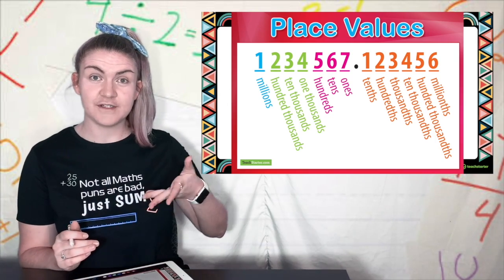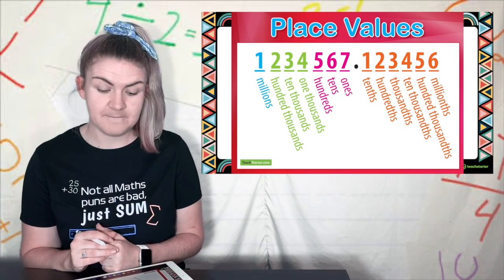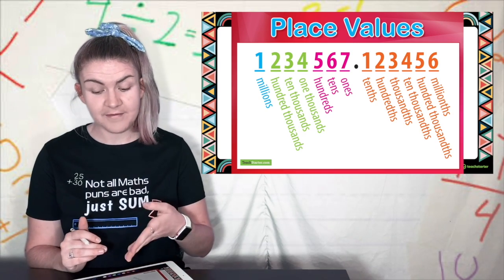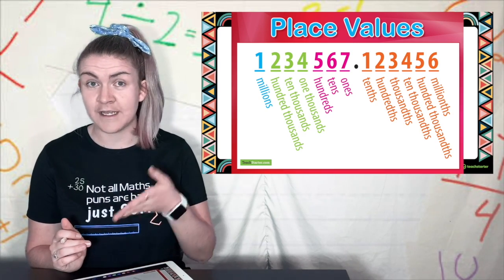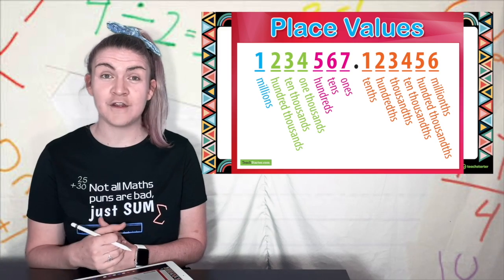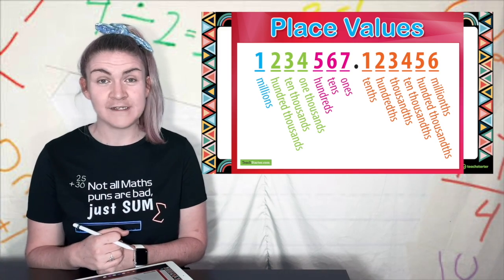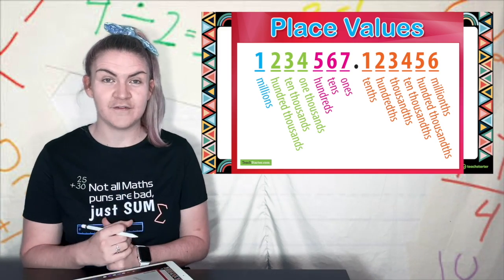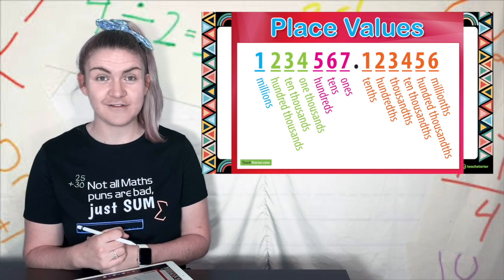So we have ones, tens, hundreds and so on as we get bigger and then in our decimals we have tenths, hundreds, thousands, ten thousands. It's really important that you know these place values of decimals. But as long as we line up all the place values of each number we can just add and subtract as normal.